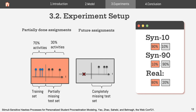In the experiment setup, for partially done assignments, we used the first 70% of activities of each student-assignment pair as training, and the remaining 30% as a partially missing test set. For future assignments with no historical observations available, we use nothing for training, and their future activities form the completely missing test set. The ratio between partially done assignments and future assignments across datasets is respectively 90:10, 10:90, and 80:20.